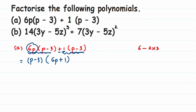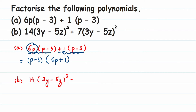So the answer to the first question is (p - 3) into (6p + 1). Now let's start the second one. We have 14 into (3y - 5z) to the power 3, plus 7 into (3y - 5z) to the power 2.